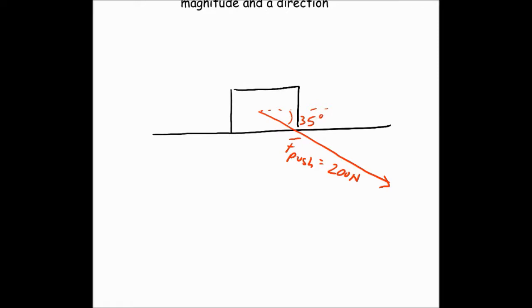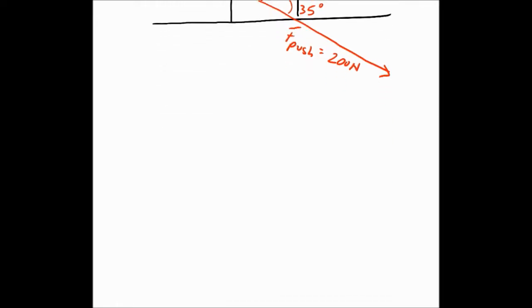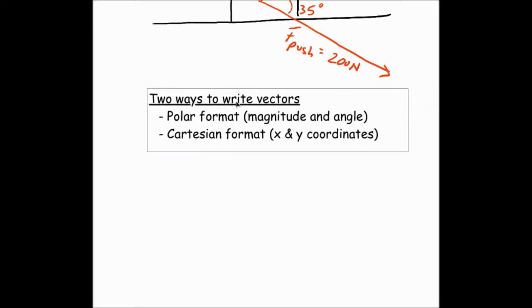So there are two ways to write a vector. Mathematically, you can do them in polar form or Cartesian form. Polar is what we just described, a magnitude and a direction.